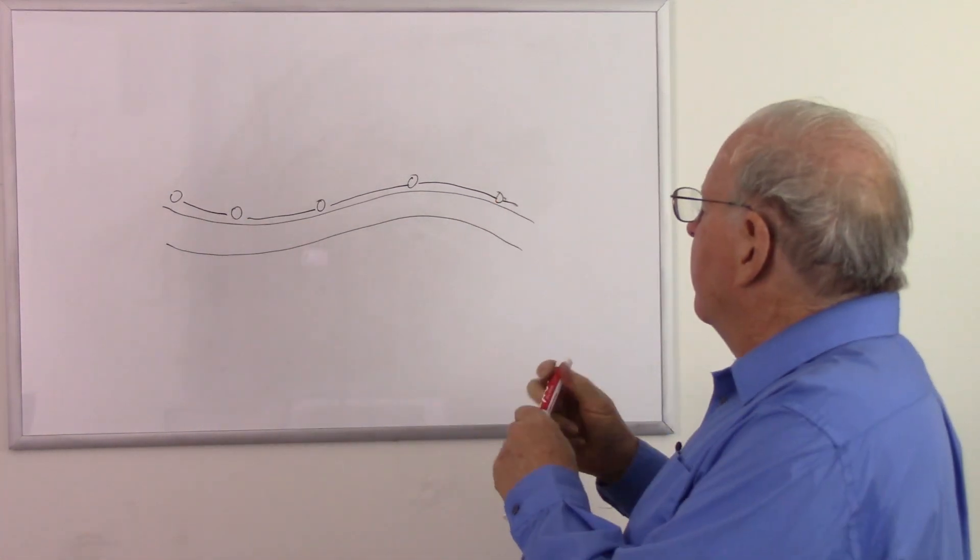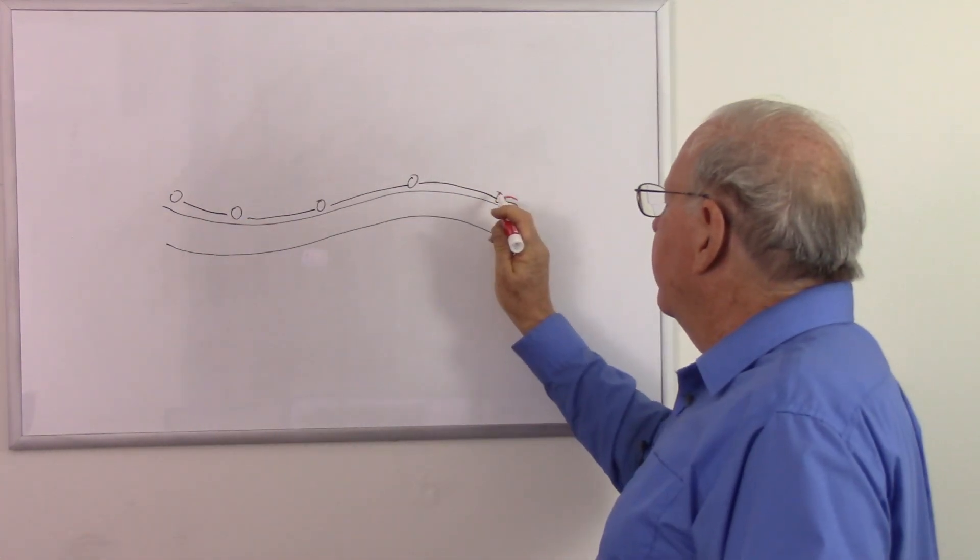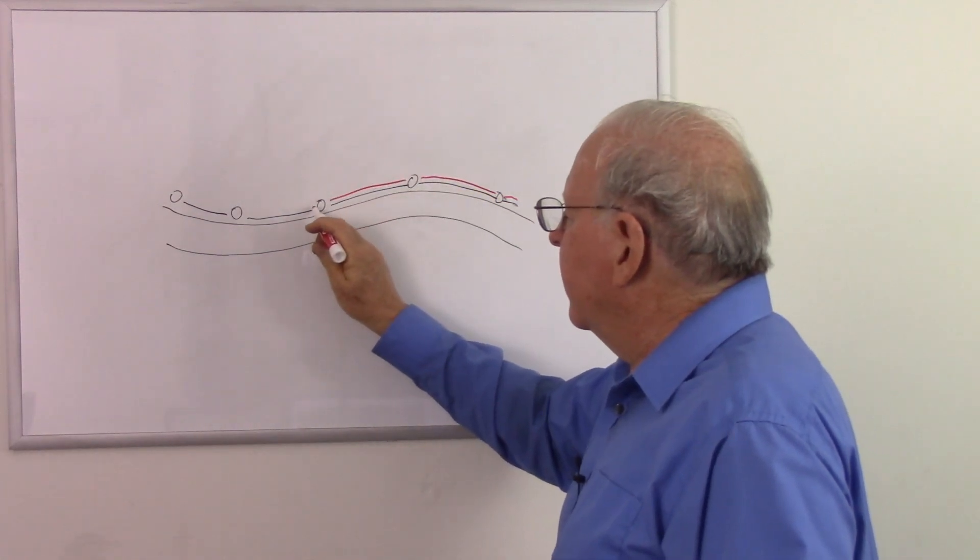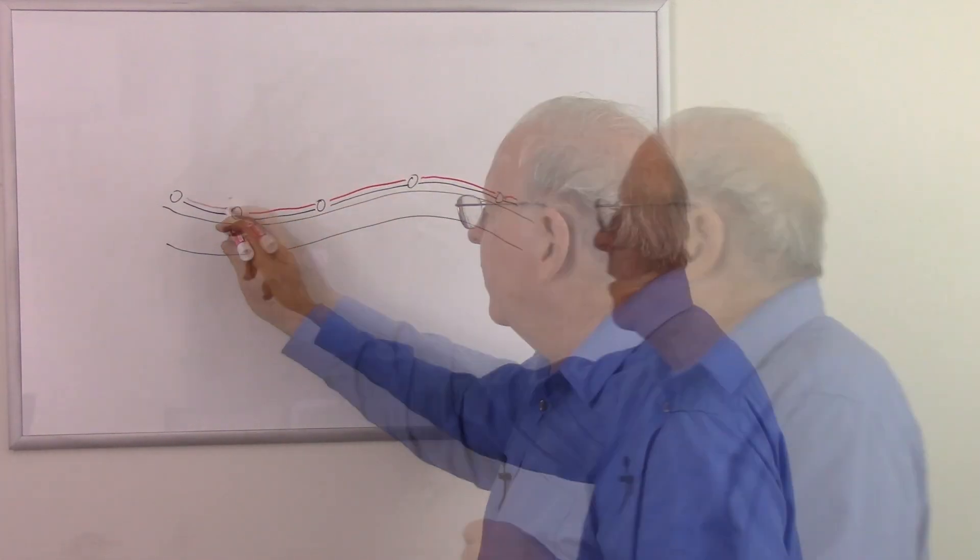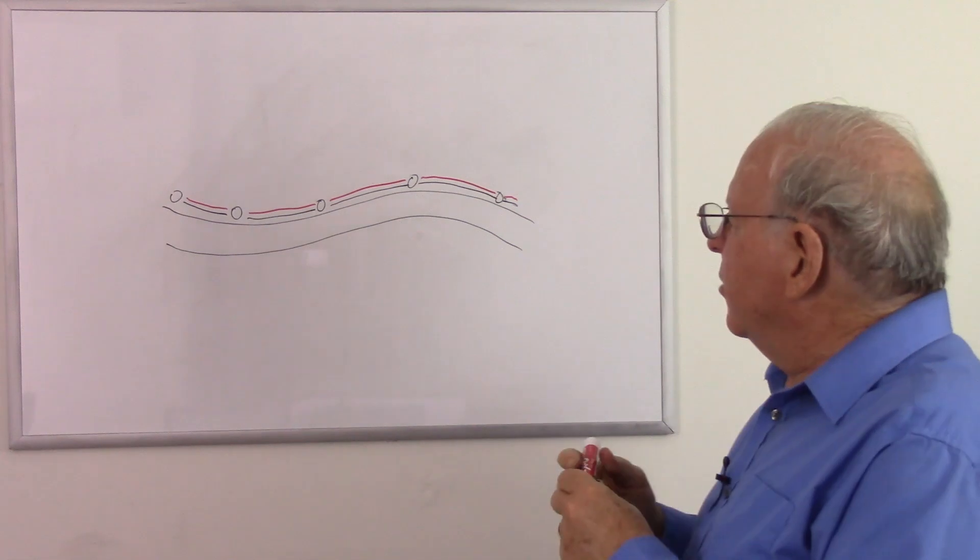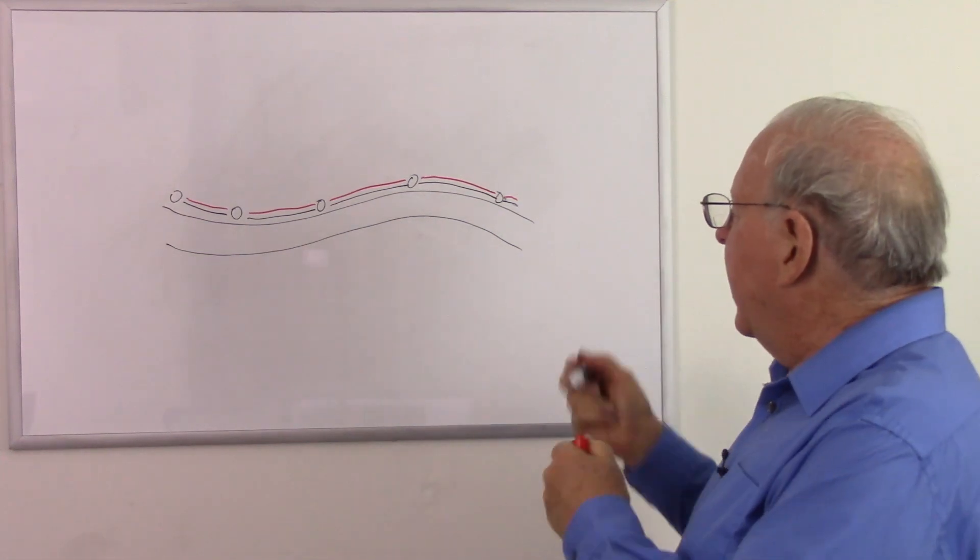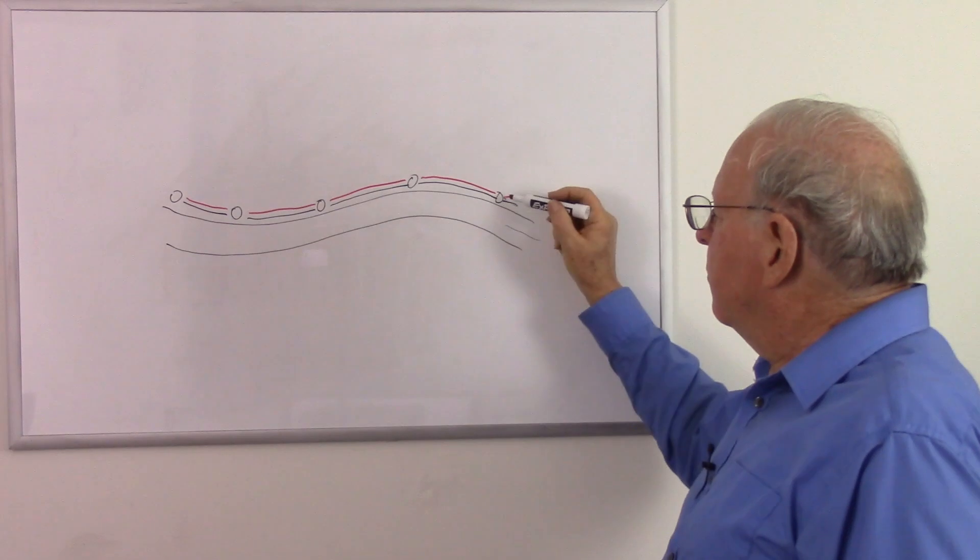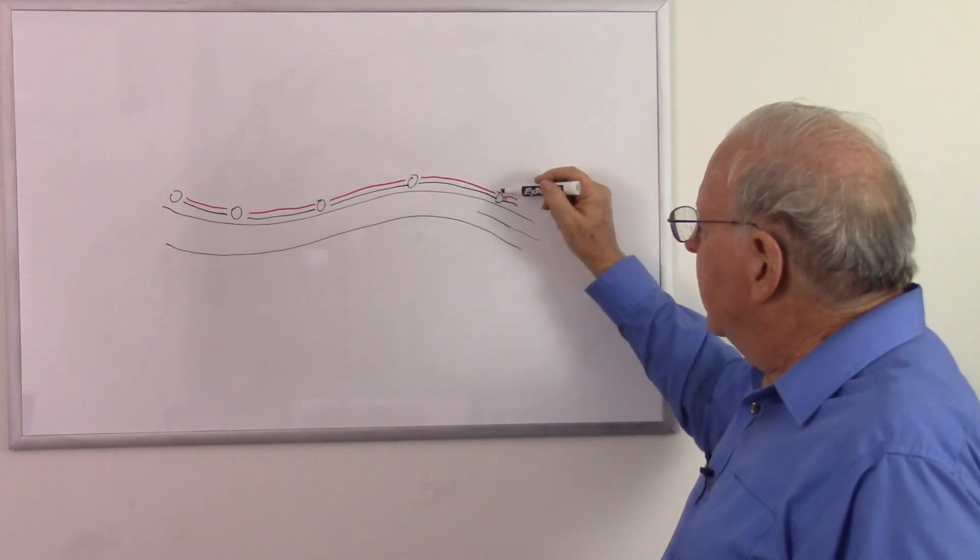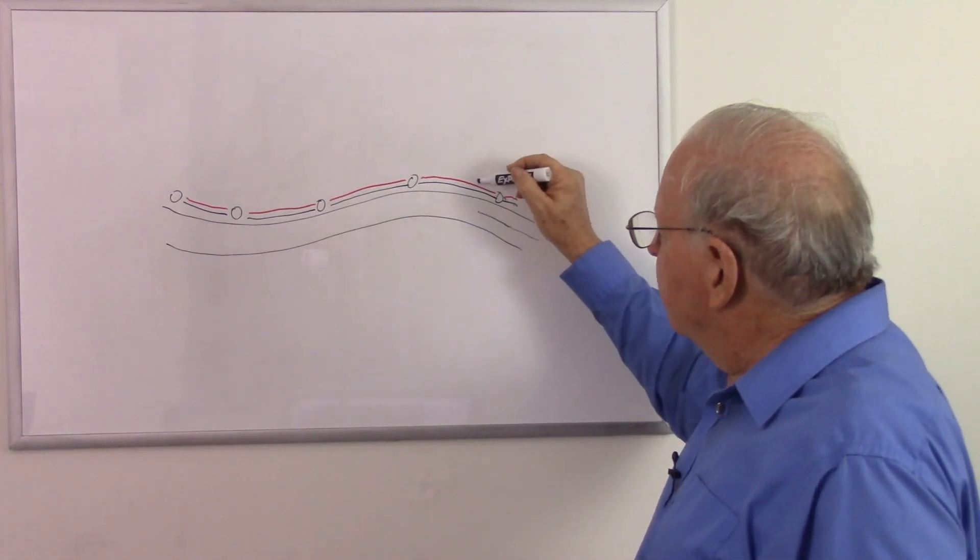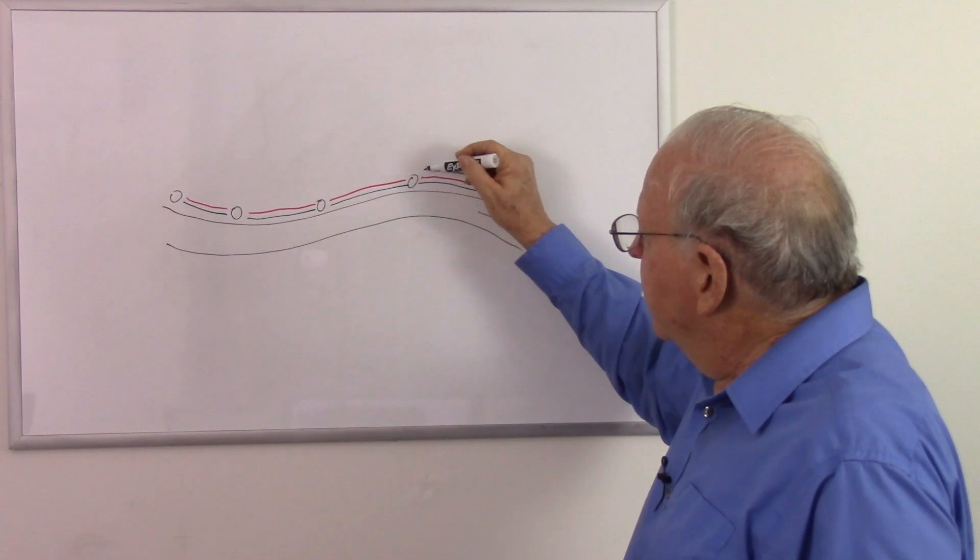So there's a black wire to there, to there, to there, and to there. And then the red wire is going to go to here, then to there, then to there, then to there. I'm leaving some gaps so I can do some erasing.